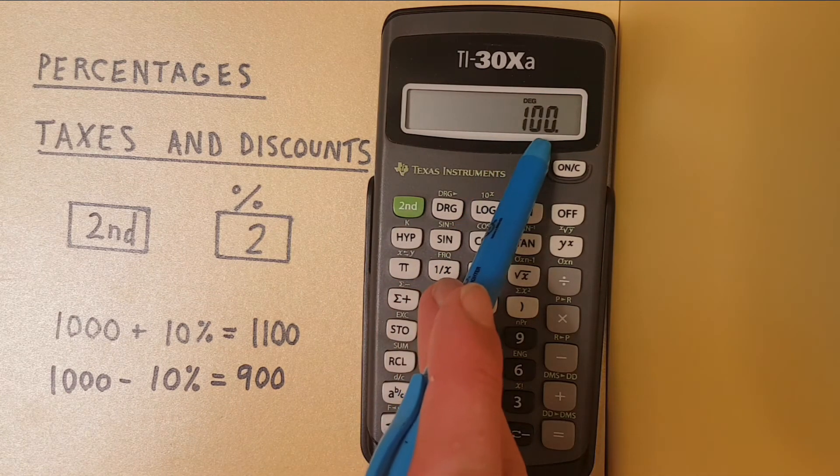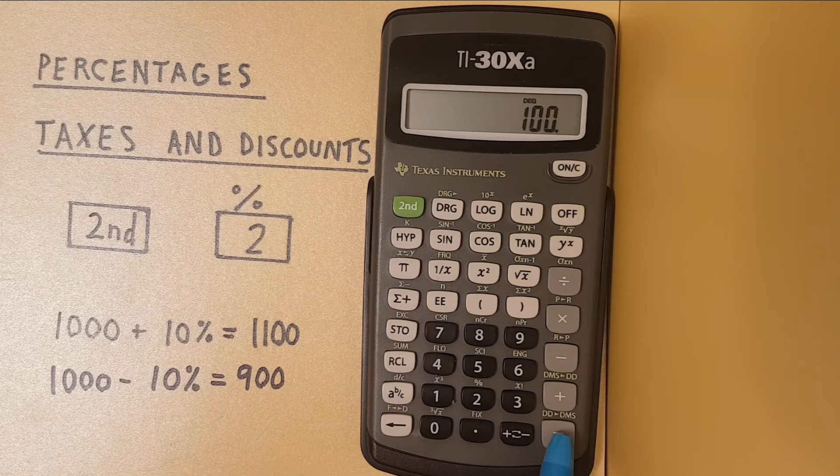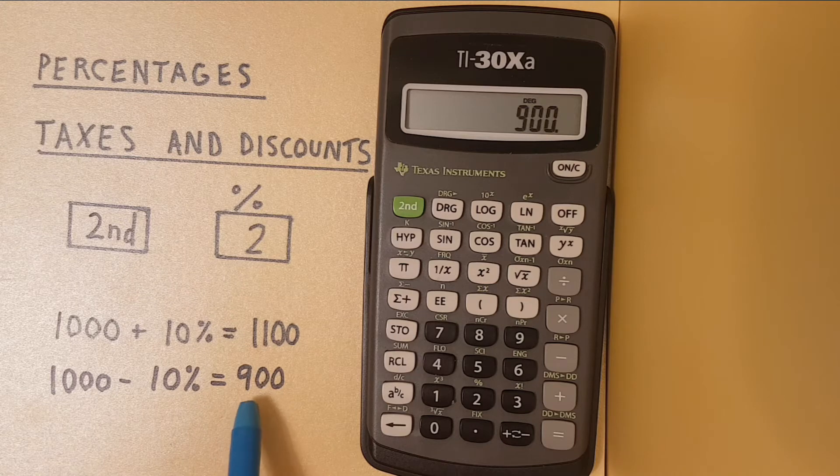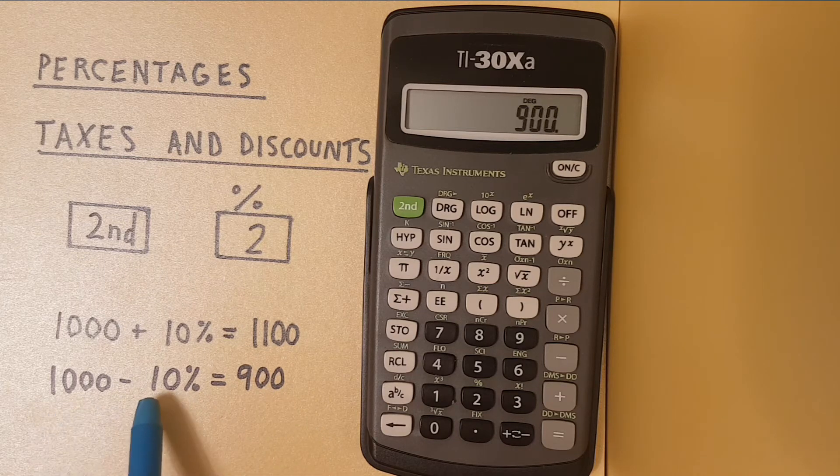This changes to the 10% and then press equals and we get 900 which we know should be 1,000 minus 10%.